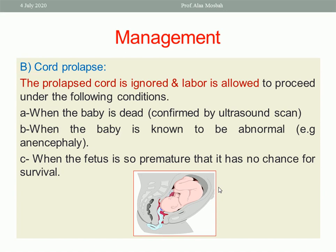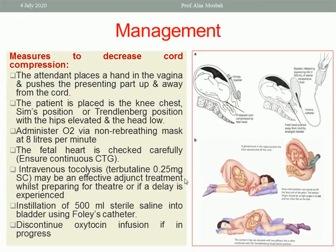When the fetus is so premature — suppose the baby is about 20 weeks or less and the chance for survival outside is very low — counsel your patient and continue vaginal delivery. But if the baby has a chance for life and is alive, you should do all measures to avoid compression of the cord.